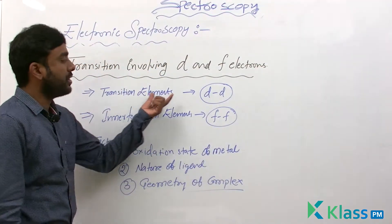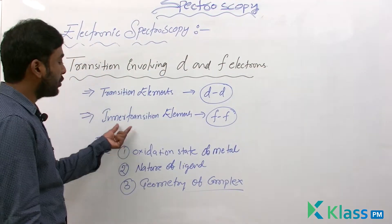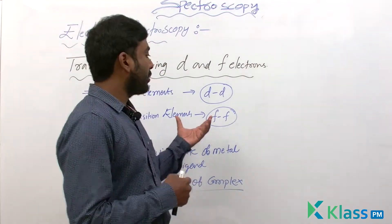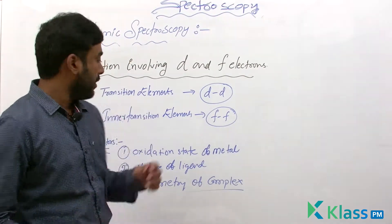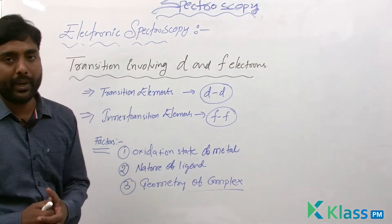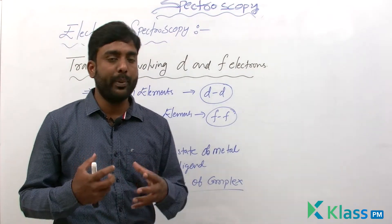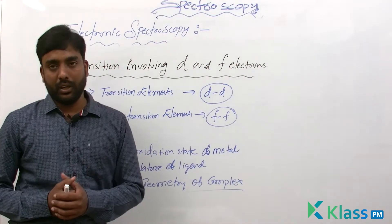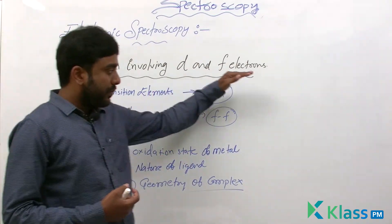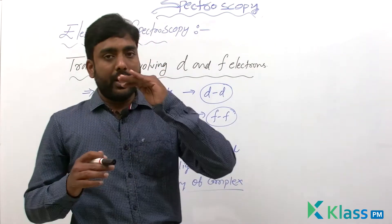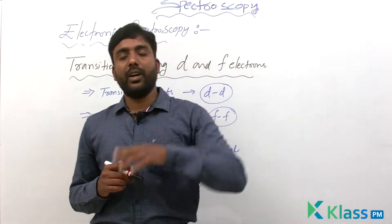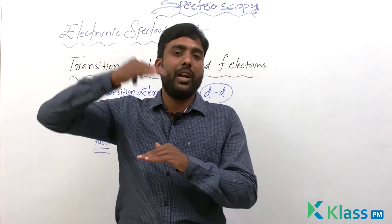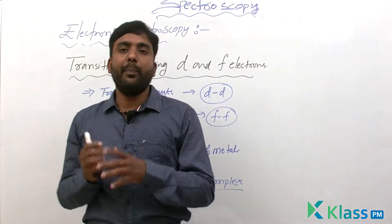The lanthanides and actinides, which are inner transition elements and f-block elements, exhibit f-to-f transitions in their absorption electronic spectra. The difference in energy levels between the ground state and excited state determines whether a transition occurs, and this energy difference in these complexes depends on three factors.